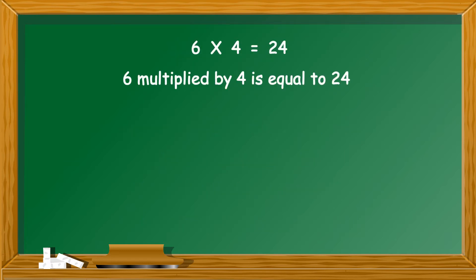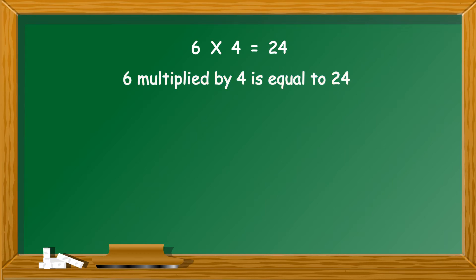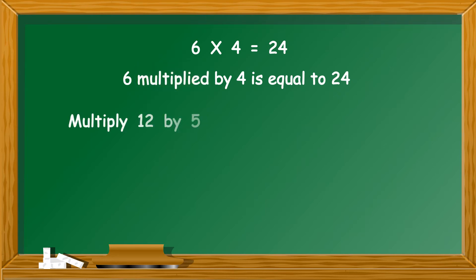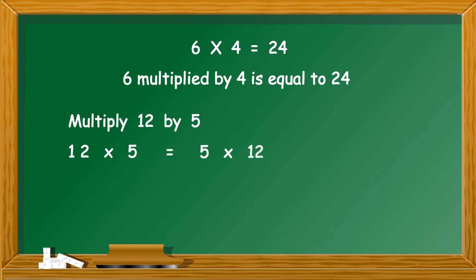Let us consider the first method of reading a multiplication statement: 6 multiplied by 4 is equal to 24. Whenever you see 'multiply' in the question, you have to find the product of the given numbers. For example, multiply 12 by 5. You will write 12 into 5. You may not know the tables of 12, but you can interchange the multiplicand and the multiplier. So instead of 12 into 5, you can write 5 into 12.